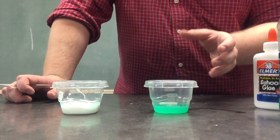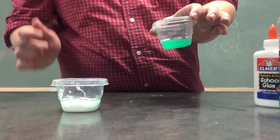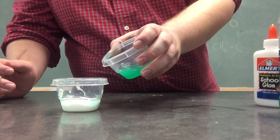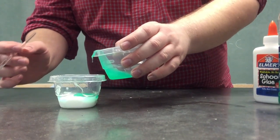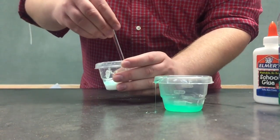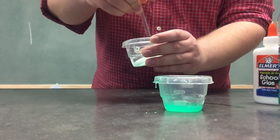Now, to make Silly Putty, which is a polymer, you're going to take a little bit of your borax, which is going to be your reacting agent, and take a little bit of it and pour it into the glue. Once that happens, you're going to start mixing the borax with the glue.